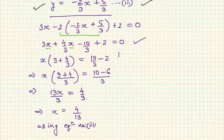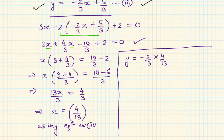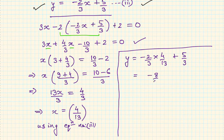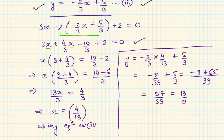Now using equation number three to find y: y = (-2/3)(4/13) + 5/3 = -8/39 + 5/3. Taking LCM of 39: (-8 + 65)/39 = 57/39. Simplifying by dividing by 3: y = 19/13. So we get x = 4/13 and y = 19/13.